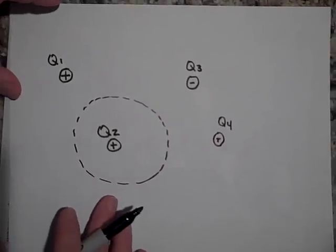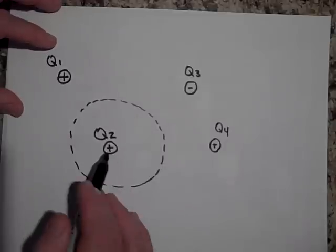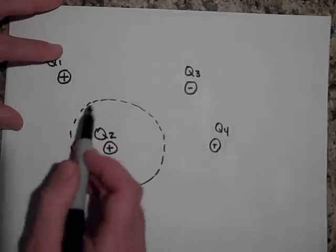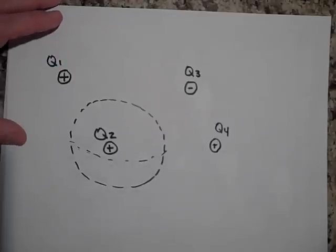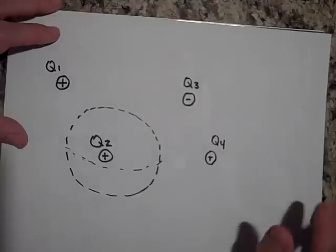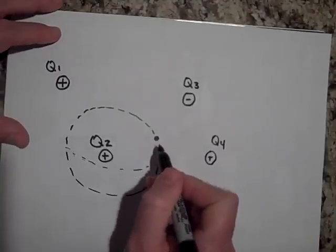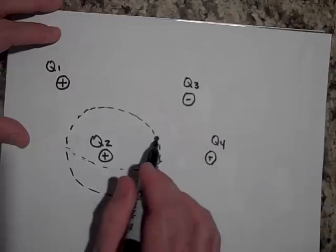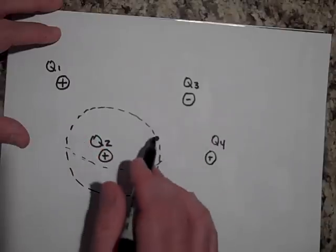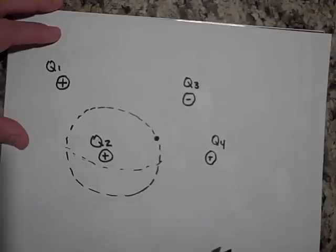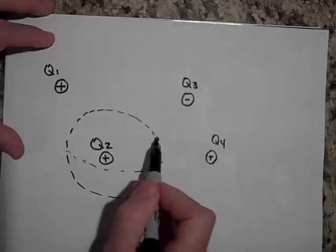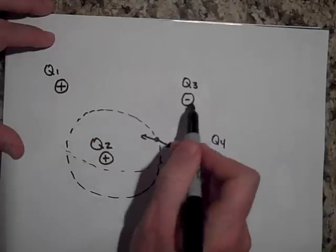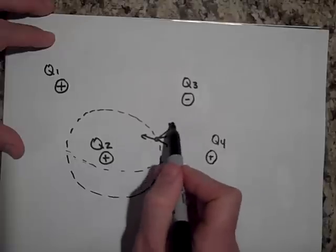All right, next we got all these charges here: Q1, Q2, Q3, Q4. Then here's this closed surface, it's a sphere, a closed surface, let's say. What I'd like you to do is tell me for this point right here, which of these affect the electric field at that point? Which of these charges affect the electric field at that point? Okay, so the answer is that they all do. If I put a positive test charge here to check the field, this one's pushing this way, this one's pushing that way, this one is pulling, this one's pushing that way. They're all affecting it.